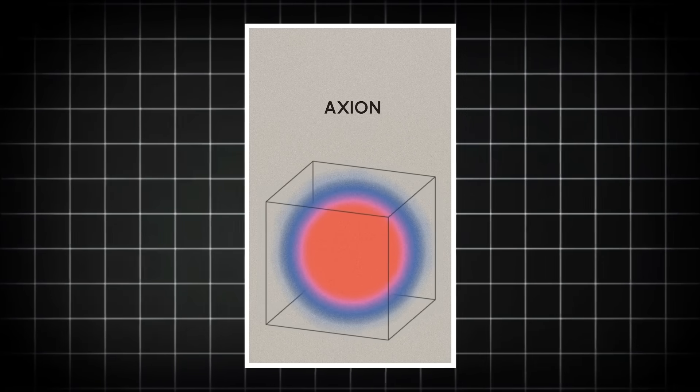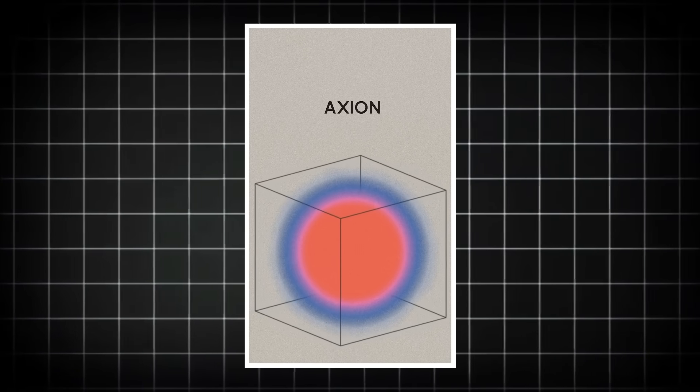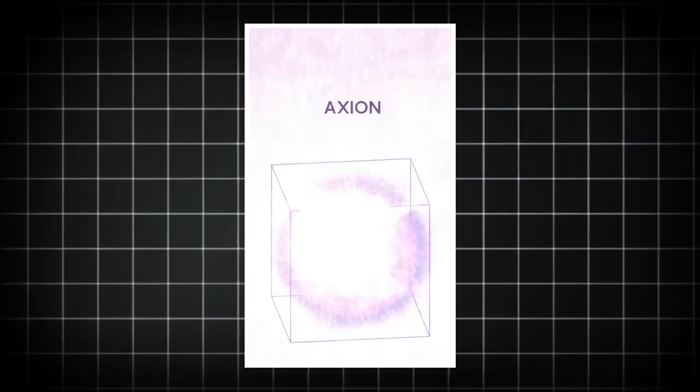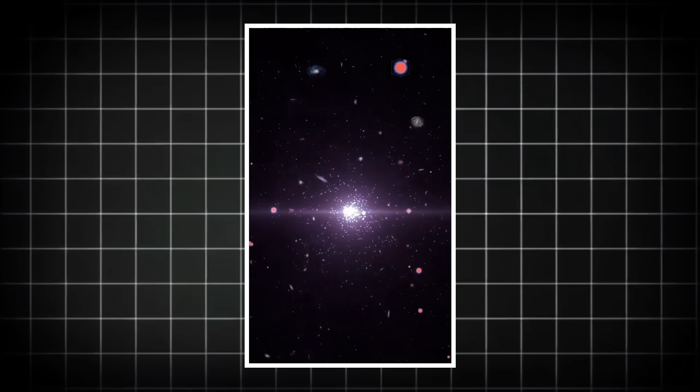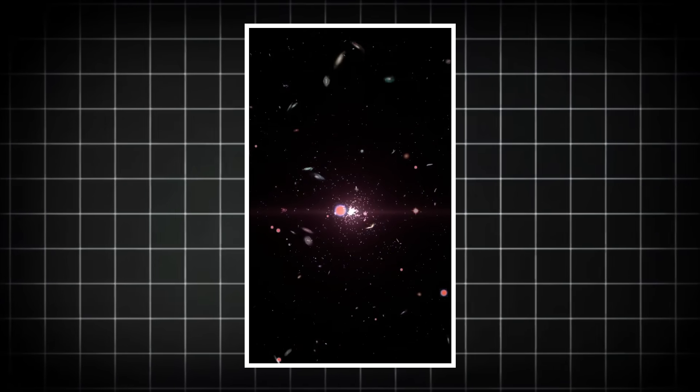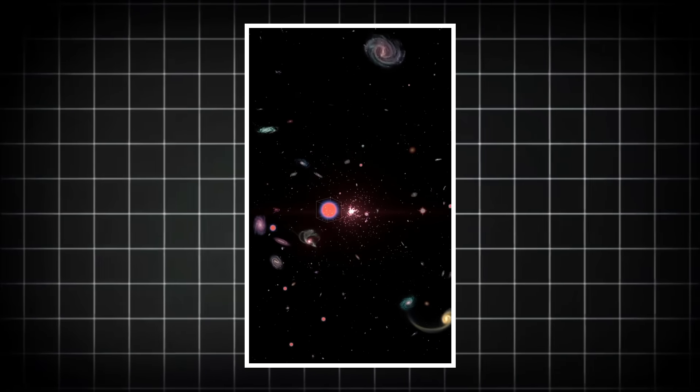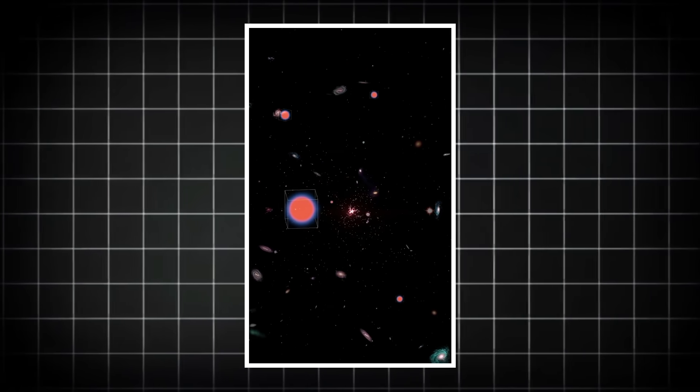Then it was quickly realized that it's a good dark matter candidate. There are natural mechanisms for how these axions can be produced during the Big Bang. These mechanisms can then give rise to axion fields that match the properties of dark matter as we observe it now.